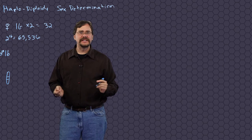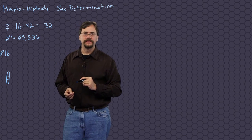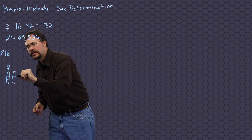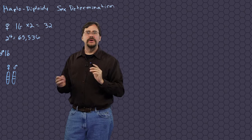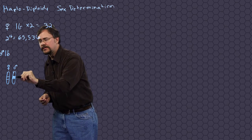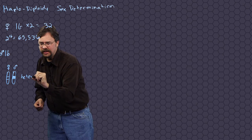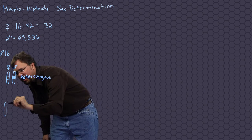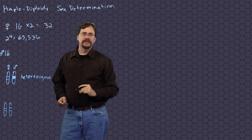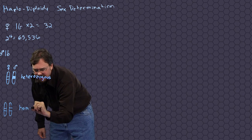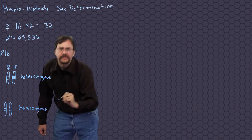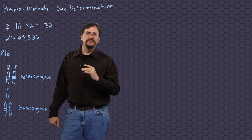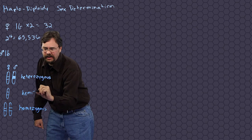There may be 20 or more alleles, or forms, of this particular gene in the honeybee gene pool. One copy of this gene comes from the queen bee, and another copy will come from the drone bee. When these two genes are different alleles, this is known as a heterozygous condition. If the queen bee and the drone both pass along identical alleles, this is known as a homozygous condition. With honeybees, we also have a third condition where there is only a single copy of the gene — this is known as a hemizygous condition.